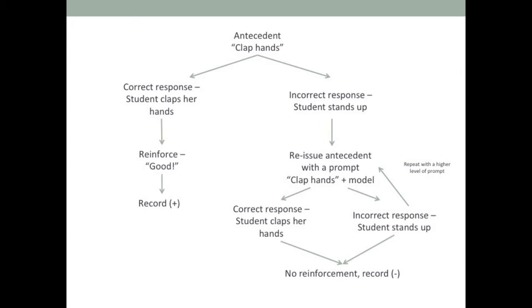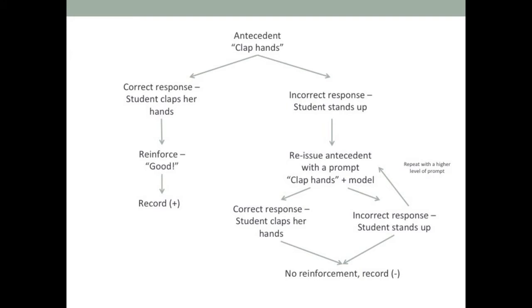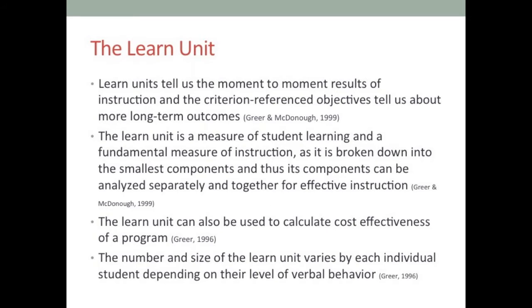Here's another example of a Learn Unit: the antecedent is 'clap hands,' the student responds correctly, you say 'good' and record a plus. If the student responds incorrectly and stands up instead, you repeat the antecedent 'clap hands' with a model. If the student still responds incorrectly, you repeat again with a higher level of prompting — like a hand-over-hand prompt — until the student performs the correction. That still constitutes one Learn Unit and one minus on your data sheet.